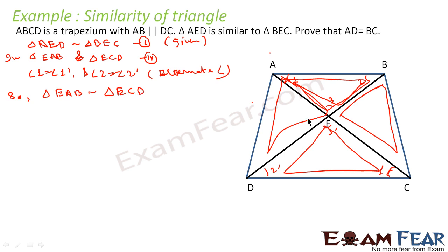So till now we can prove that both are two similar triangle pairs. Now since we have to prove AD is equal to BC — if you look at AD and BC, they are sides of triangles EAD and EBC. If somehow we can prove that ED is equal to EC, then we can establish the equality.